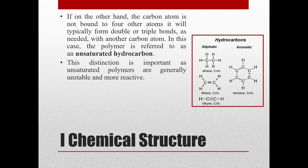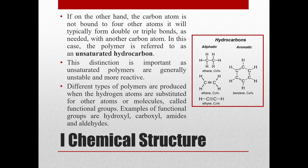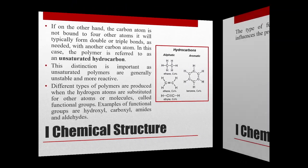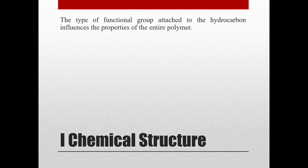It is better to know what kind of hydrocarbon we are dealing with. Different types of polymers are produced when hydrogen atoms are substituted by other atoms or molecules called functional groups. When we substitute hydrogen atoms with functional groups, the properties of that polymer change. Examples of functional groups are hydroxyl, carboxyl, amides and aldehydes. The type of functional group attached to the hydrocarbon influences the property of the entire polymer.